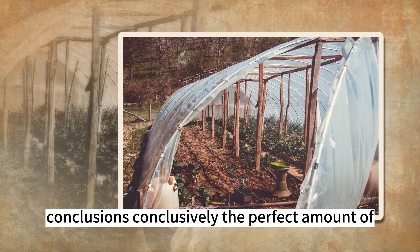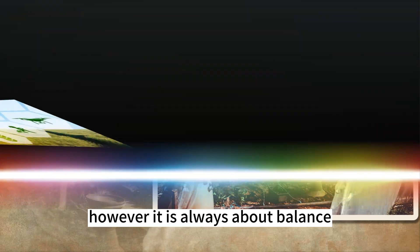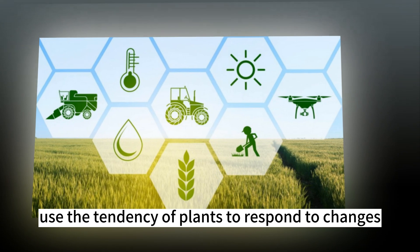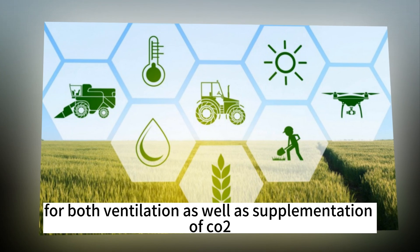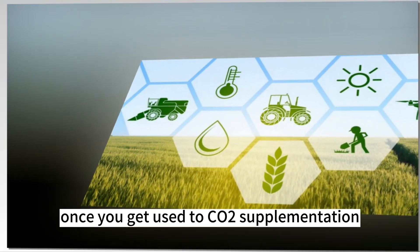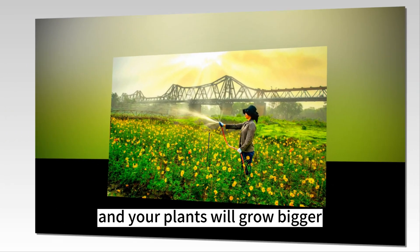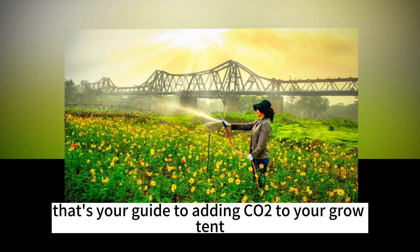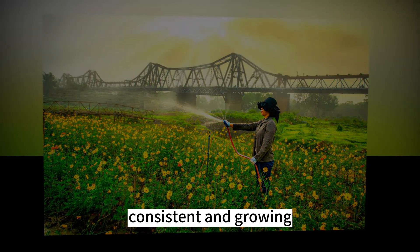Conclusively, the perfect amount of CO2 will result in significant growth of your plants. However, it is always about balance — use the tendency of plants to respond to changes and experiment with both ventilation and CO2 supplementation. Once you get used to CO2 supplementation, there's no turning back, and your plants will grow bigger, faster, and healthier every single time. That's your guide to adding CO2 to your grow tent — keep experimenting, stay consistent, and keep growing.